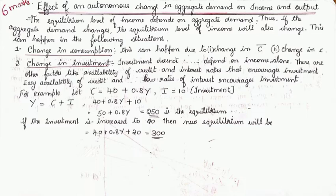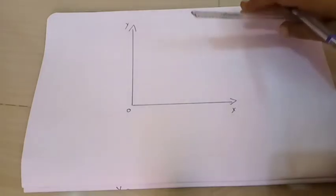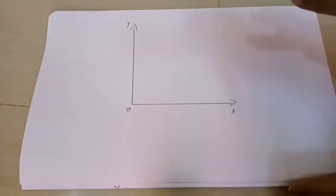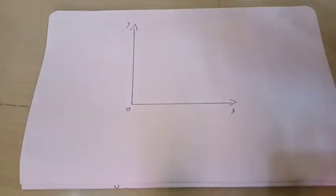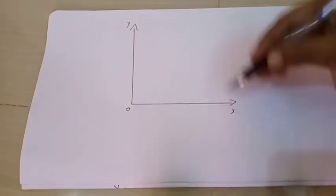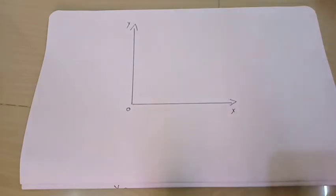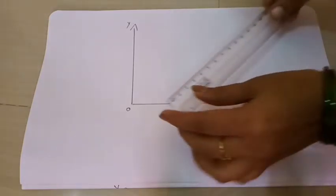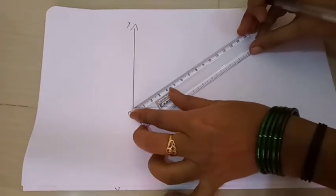Now what happens if investment is increased from 10 to 20? Then the new equilibrium will be higher, 300. Let us understand with the help of a graph. Let's move to the graph. I know most of you find it very difficult to draw graphs. We will draw along with the video itself. Grab a notebook, scale and pencil, and draw along.